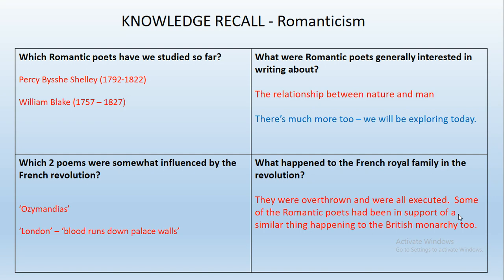Which two poems were somewhat influenced by the French Revolution? Ozymandias and London, both written around the time when the French monarchy were being overthrown. That was certainly influencing their discussion of power in their poems. What happened to the French royal family in the revolution? They were overthrown and they were all executed. Some of the Romantic poets had been in support of a similar thing happening to the British monarchy - they wanted change, they wanted something different to happen in the country.